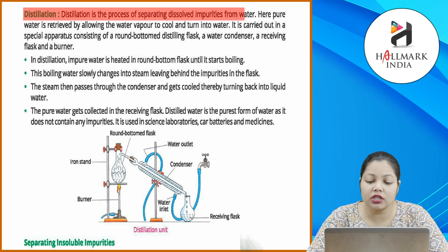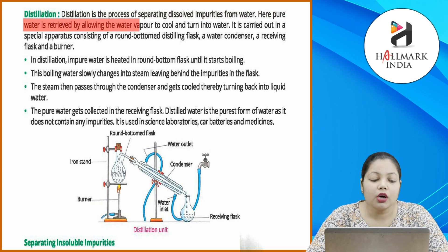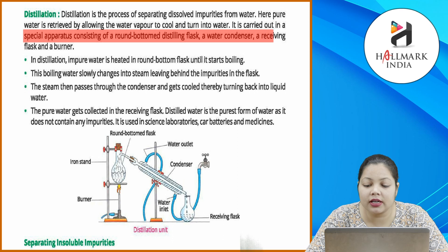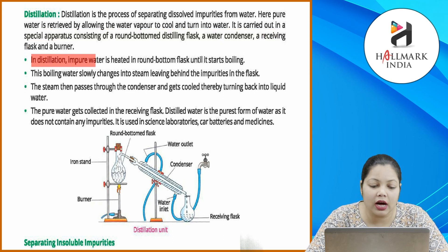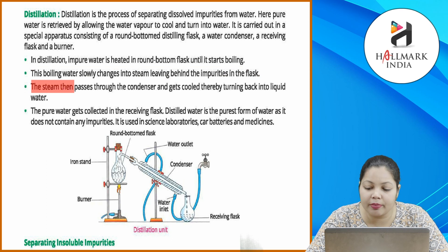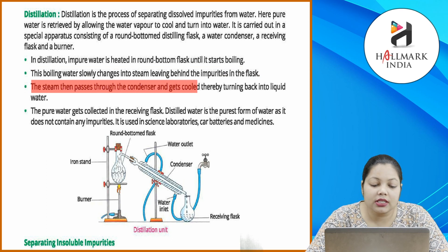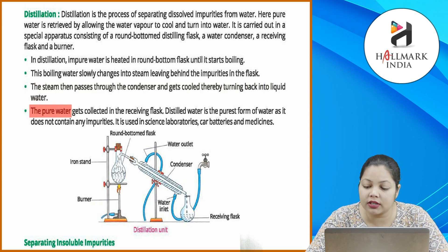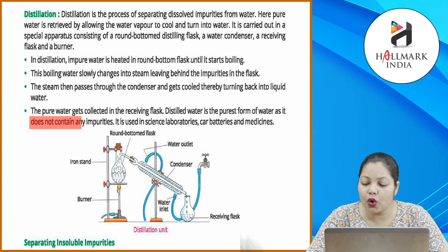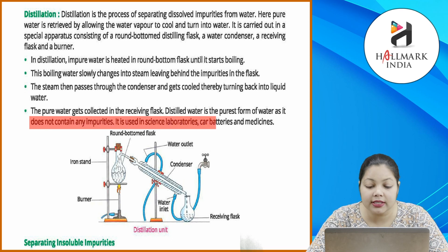Distillation: distillation is the process of separating dissolved impurities from water. Here, pure water is retrieved by allowing the water vapor to cool and turn back into water. It is carried out in a special apparatus consisting of a round-bottomed distilling flask, a water condenser, a receiving flask and a burner. Impure water is heated in the round-bottomed flask until it starts boiling. The boiling water slowly changes into steam, leaving behind the impurities. The steam passes through the condenser and gets cooled, turning back into liquid water. The pure water gets collected in the receiving flask. Distilled water is used in science laboratories, car batteries and medicines.